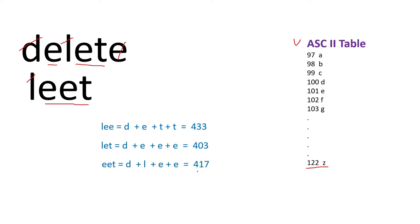Our main goal is to make the strings equal — whether it becomes 'li', 'late', or 'eet' doesn't matter — we just need to minimize the total ASCII sum of deleted characters. Among all combinations, 403 is the minimum, so that is the answer. In contrast, the previous problem just counted deleted characters, and in all three cases the count is 4, but the ASCII sums are different. So 403 is our answer here.